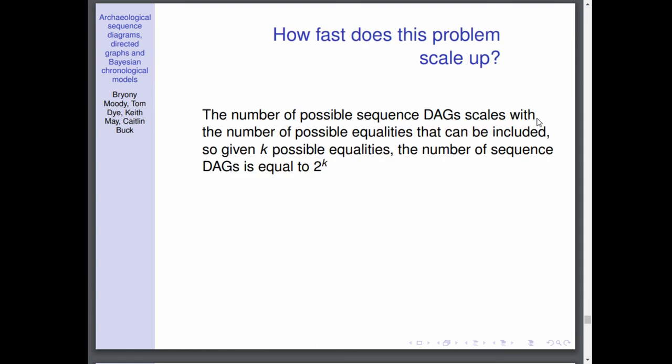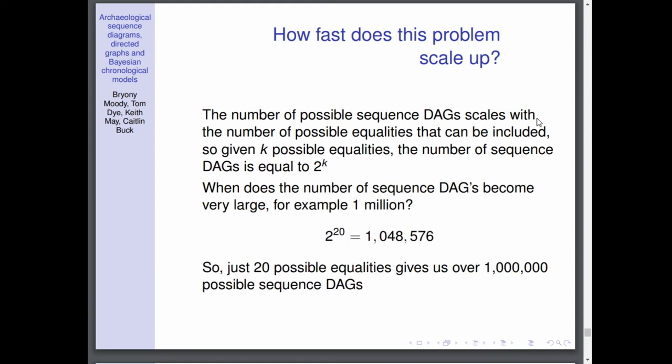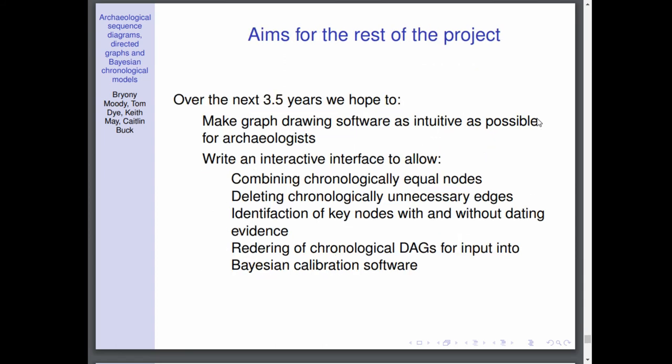How big does this problem scale up? What does n equal? Well given k possible equalities, so k possible equal relationships in time that you may want to consider for your chronological model, that gives you 2^k possible sequence DAGs. So how big does that grow? When does it become, say for example, a million? Just 20 possible relationships to consider gives you over a million possible sequence DAGs. So you can see that it grows quite quickly.